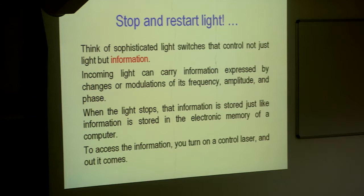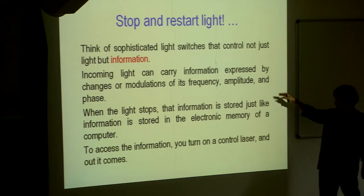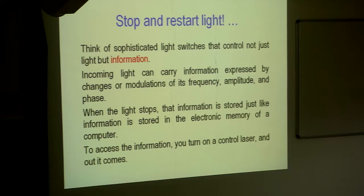Suppose, I have coded some information in my incoming light and that can be changes or modulation frequency, amplitude phase, what have you. When the light stops, that information is stored just like information is stored in electronic memory of this computer. It is a stable state unless like a switch, it is bi-stable, on is on, off is off. This is essentially the idea of stopping and restarting light.